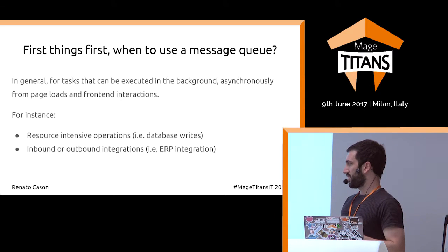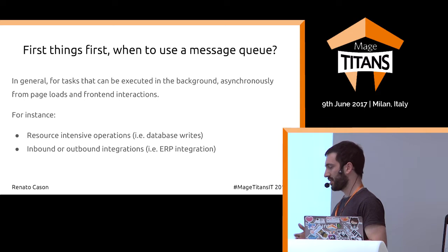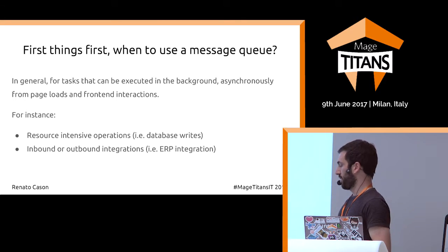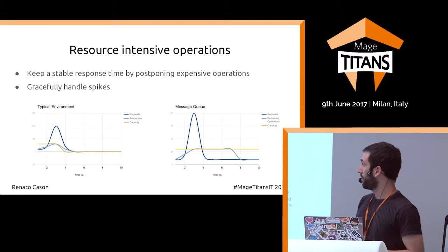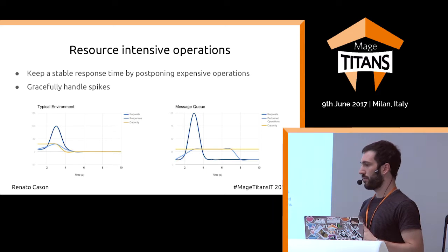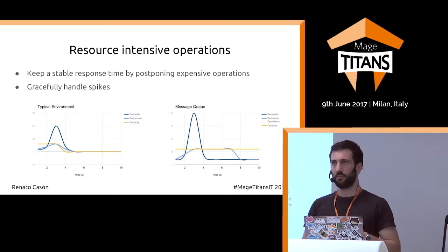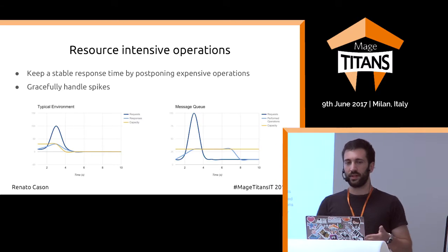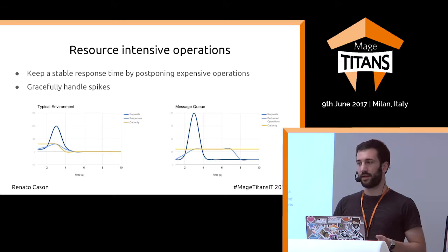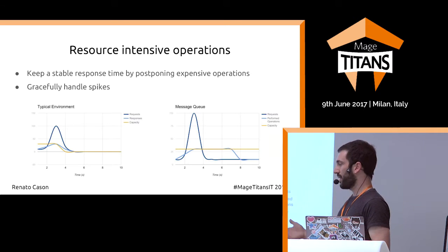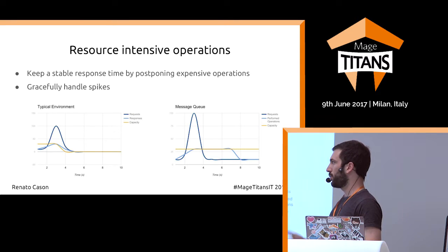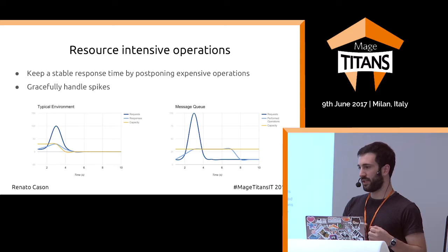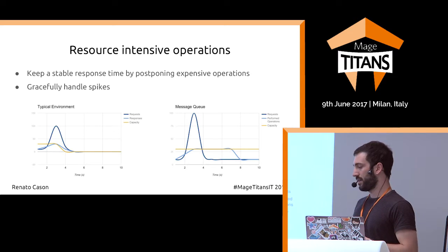The first example is resource-intensive operations. If you're gathering details from customers, you might need to write them to the database, but you can queue the operation instead. When you have a traffic spike, your database won't max out — you'll keep handling requests over time by storing them on the side and processing them later.